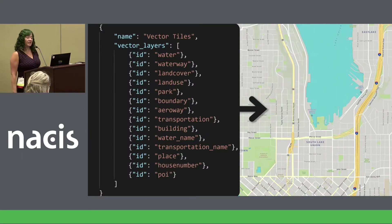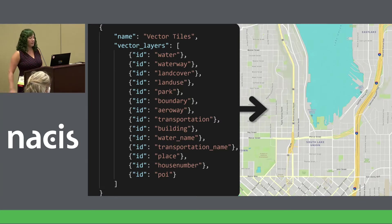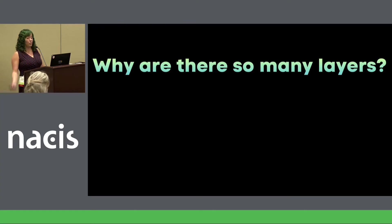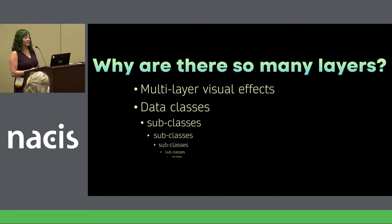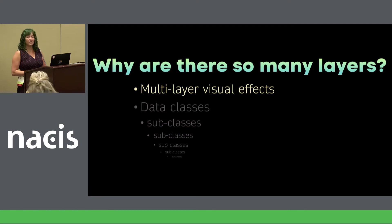Vector tiles contain layers of data. Some examples of those layers include things like water and land use, buildings, and points of interest. A style sheet for rendering the map has about 150 to 200 layers. So your first question is probably: why does the style sheet have to have so many layers? There are a couple of reasons: multi-layer visual effects and data classes.